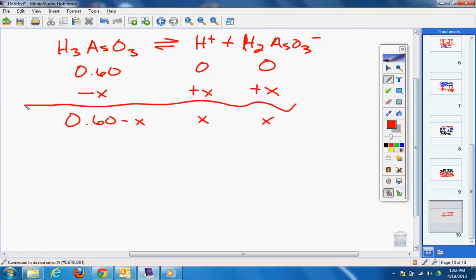Now, you always get a point on AP for writing the equilibrium expression. So what's that going to be? Ka equals [H⁺][H₂AsO₃⁻] over [H₃AsO₃]. You have to write the Ka expression.